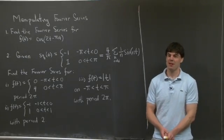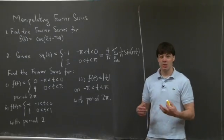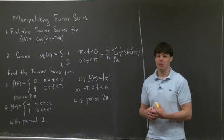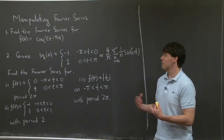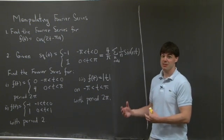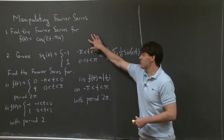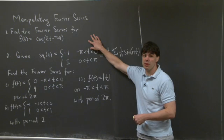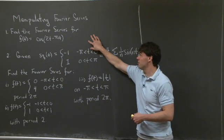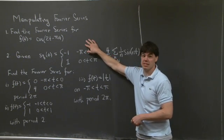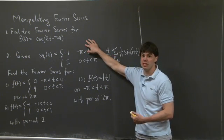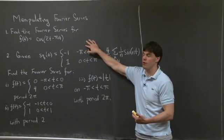Hi everyone, welcome back. So today I'd like to look at a problem on manipulating Fourier series. Specifically, we're asked to find the Fourier series of cosine 2t minus pi over 4.